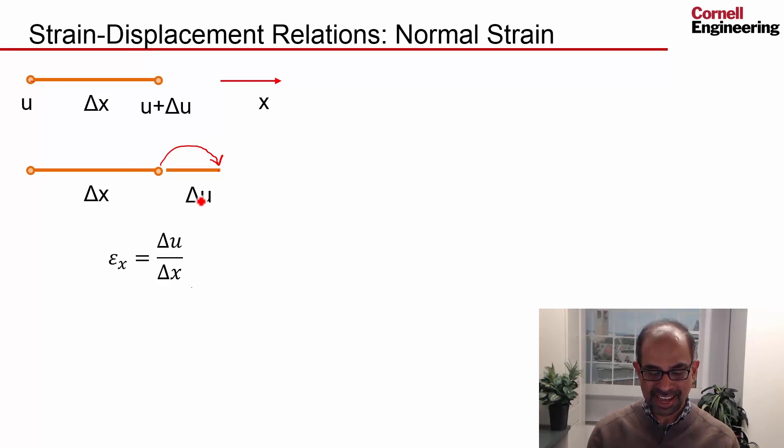The normal strain, εₓ, is the change in length divided by the original length.